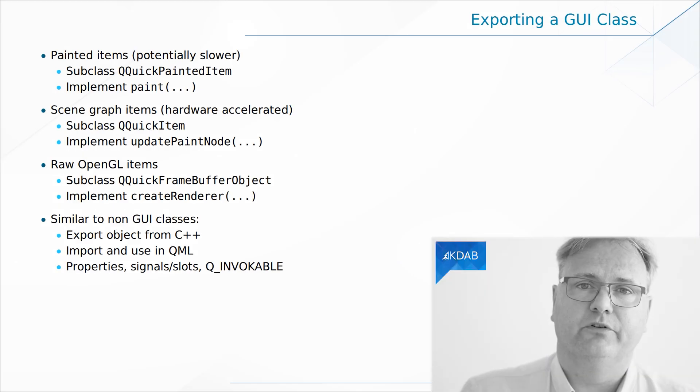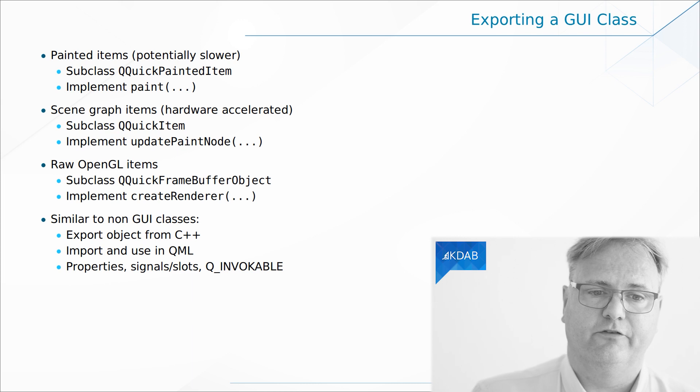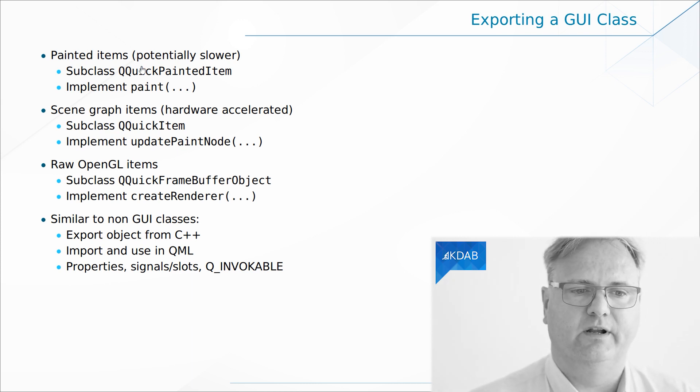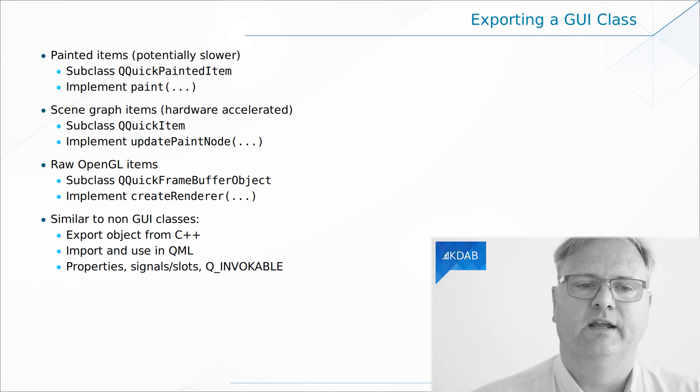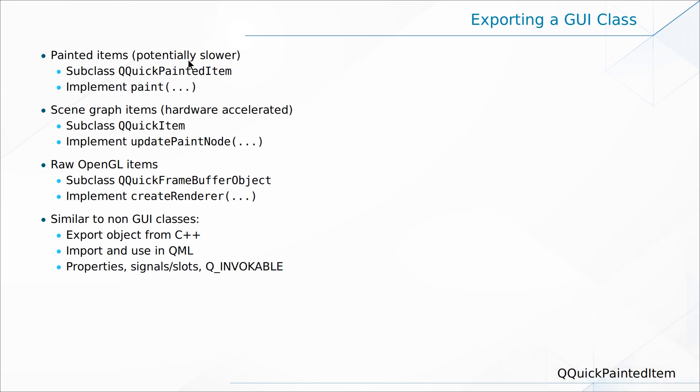You have three options whenever you create new visual elements. The first one is QQuickPaintedItem, a subclass of QQuickPaintedItem — that's the one we're going to see in this video. It says potentially slower. The next option, where you subclass from QQuickItem directly and set up the scene graph yourself, is easily weeks of work to get right. The QQuickPaintedItem, depending on what you need, you might be able to get working in a day — weeks versus days.